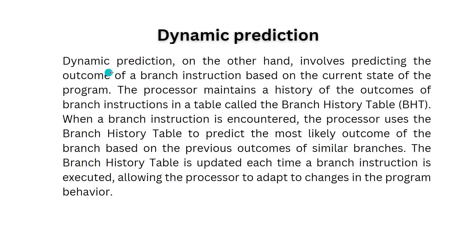Dynamic prediction involves predicting the outcome of a branch instruction based on the current state of the program. The processor maintains a history of the outcomes of branch instructions in a table called the Branch History Table (BHT). When a branch instruction is encountered, the processor uses the BHT to predict the most likely outcome based on the previous outcomes of similar branches. The branch history table is updated each time a branch instruction is executed, allowing the processor to adapt to changes in program behavior.